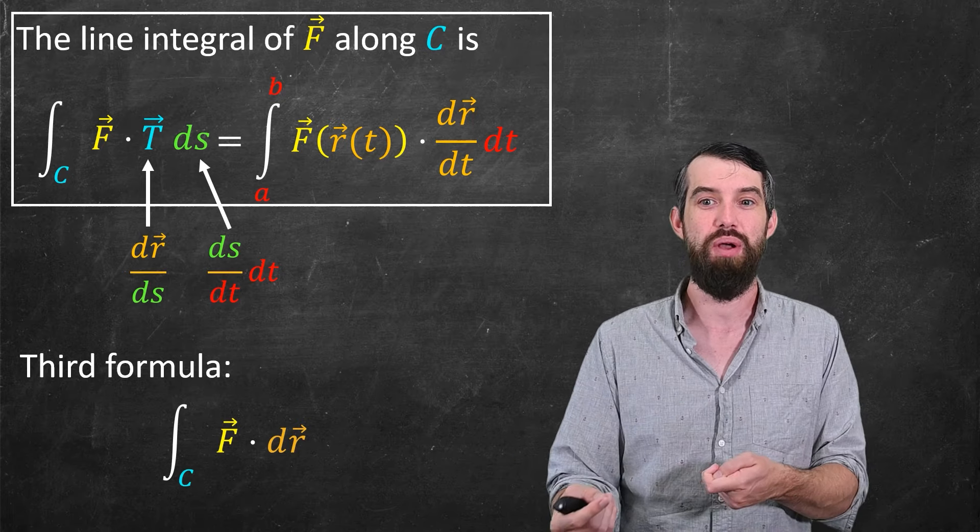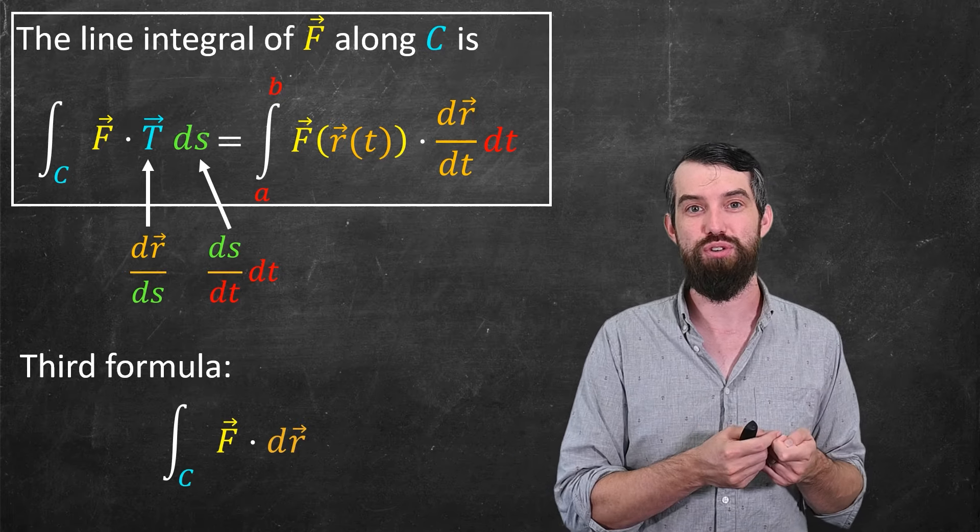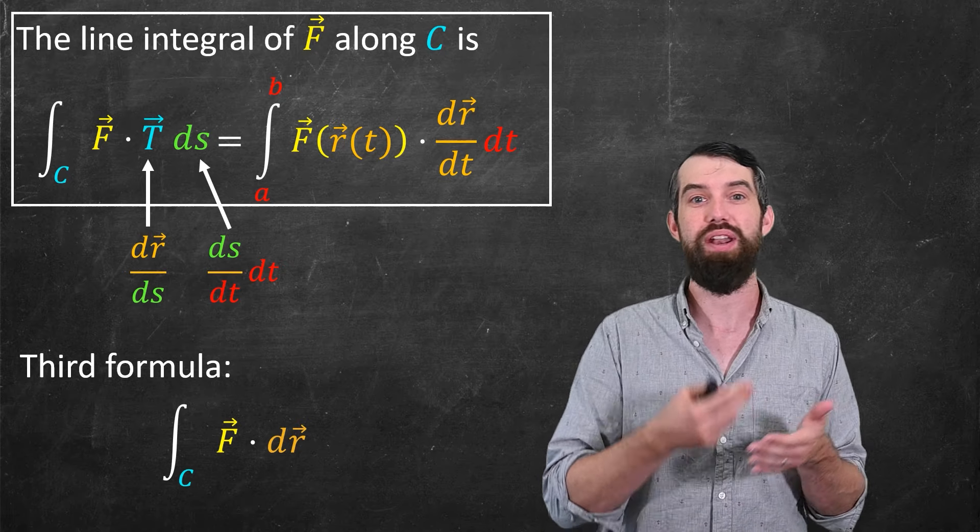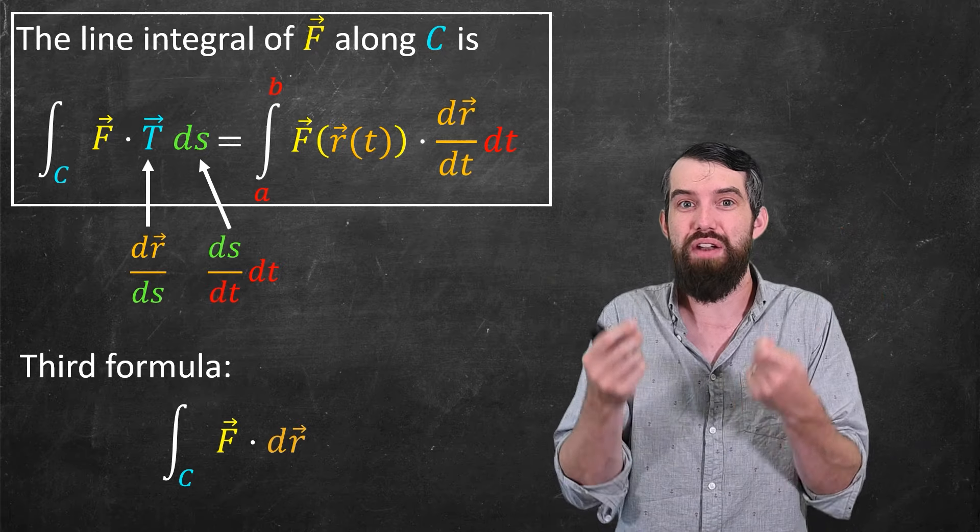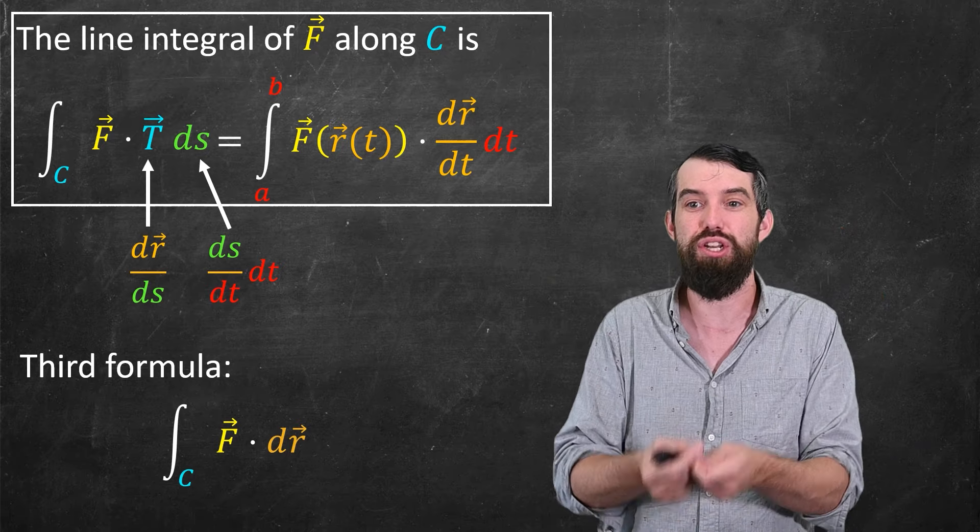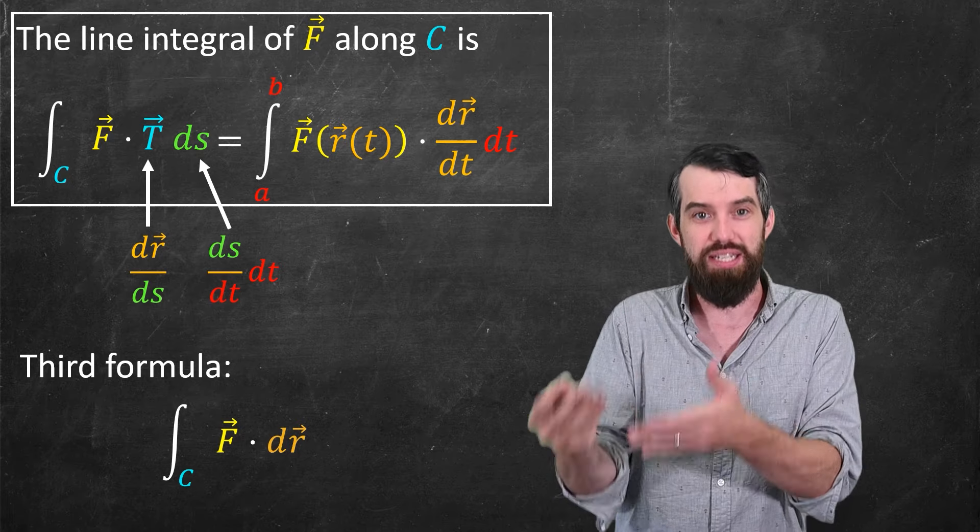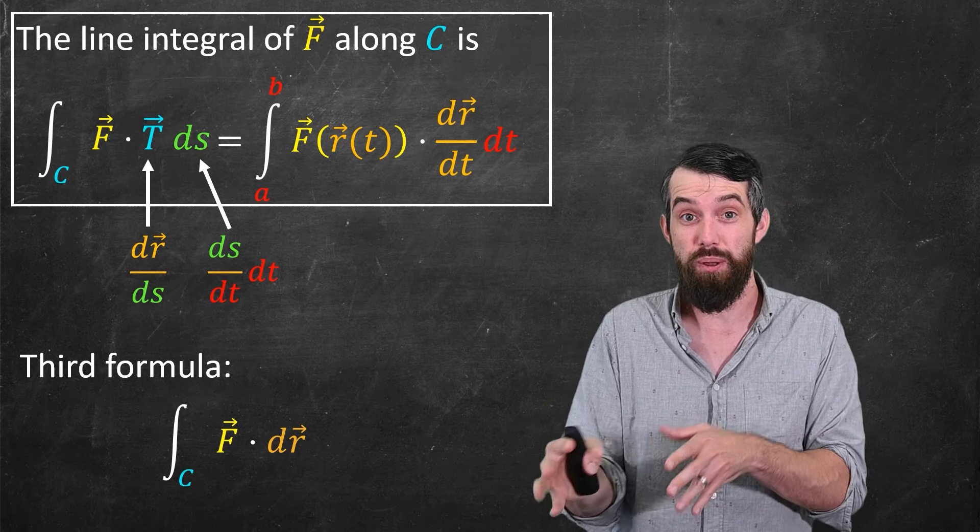It's just different terminology. So sometimes you'll see a line integral written f dot dr. Sometimes you'll see it written f dot t ds. Whenever you want to compute it though, whenever you actually have an explicit parameterization, use the middle one, this f dot dr/dt dt. The middle one is how you compute it.